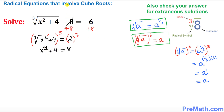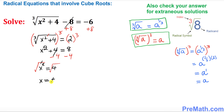Now focusing on the left hand side, we want to get rid of the positive 4, so we subtract 4 from both sides. The positive 4 and negative 4 cancel, and we simply get x squared equals 4. To undo the square, we take the square root on both sides — the square and square root undo each other — giving x equals plus or minus 2. So our solution set is negative 2 and positive 2.